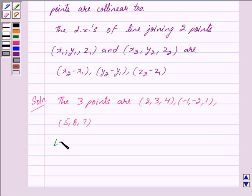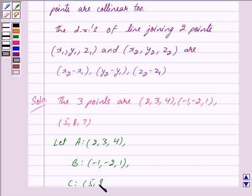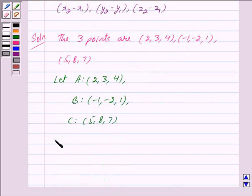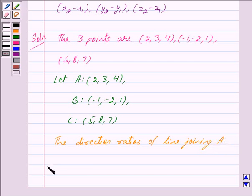So let A be (2, 3, 4), B be (-1, -2, 1), and C be (5, 8, 7). The direction ratios of line joining A and B are...